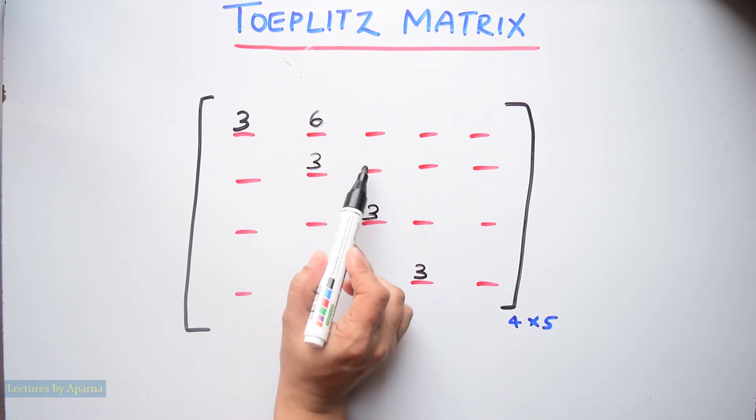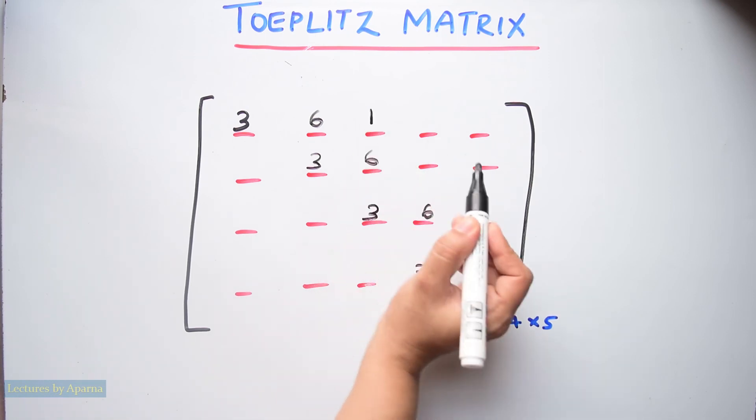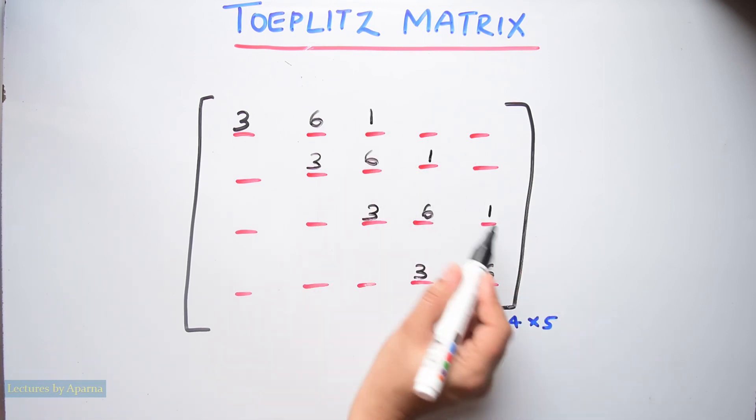I am taking number 6. Now I have to fill this diagonal with this 6. Next I am taking a number 1. Now this diagonal will be 1.